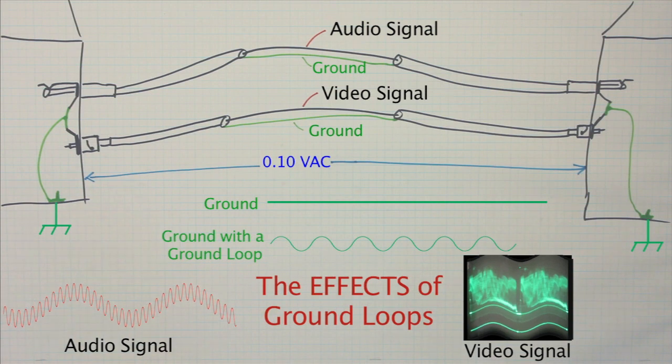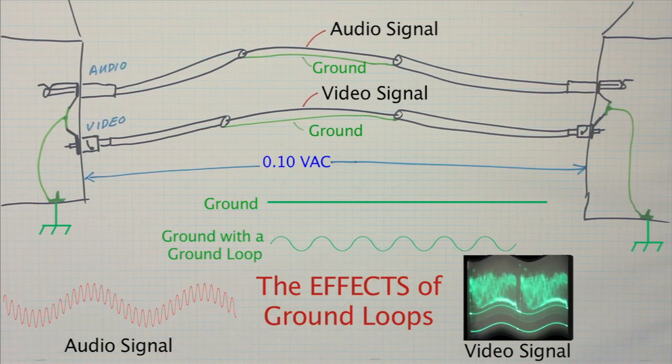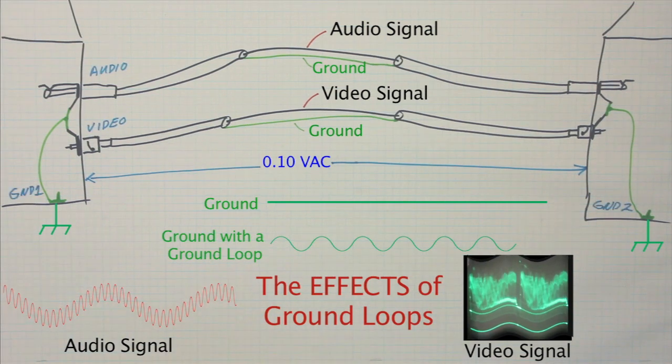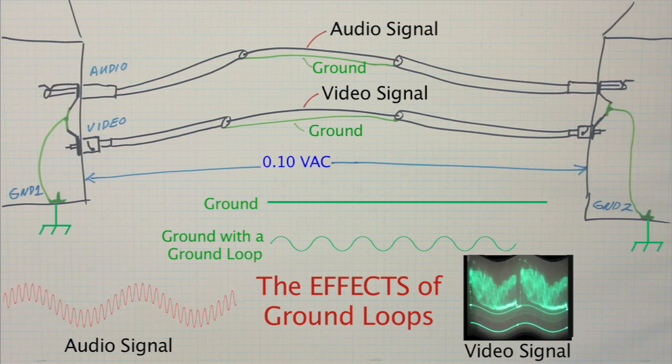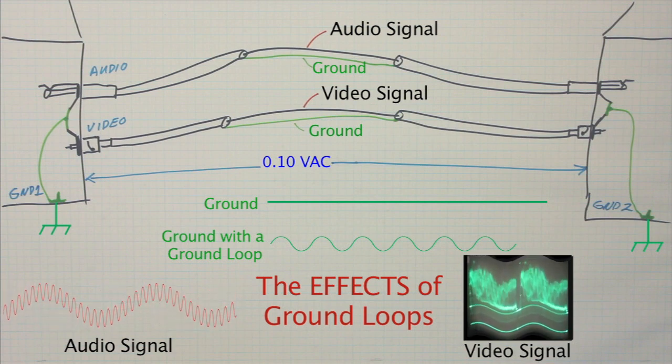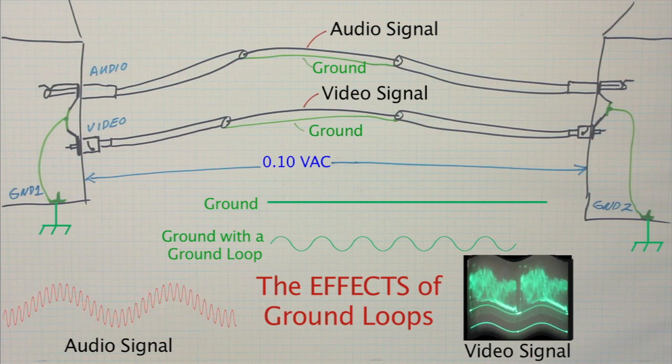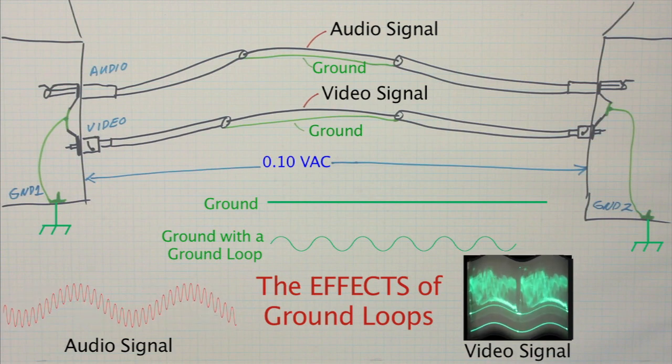With the signal ground varying in voltage, the receiving equipment sees both the intended signal and the varying signal on the ground conductor. This is why you see and or hear a 60 cycle hum and know that you have a ground loop.